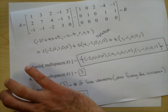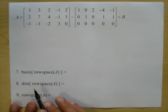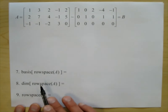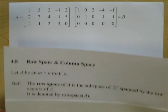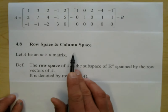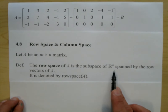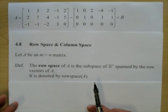Every matrix has a row space. The definition from section 4.8: if A is an m by n matrix, the row space of A is the subspace of Rn spanned by the row vectors of A, denoted row space A. You're just spanning the rows.